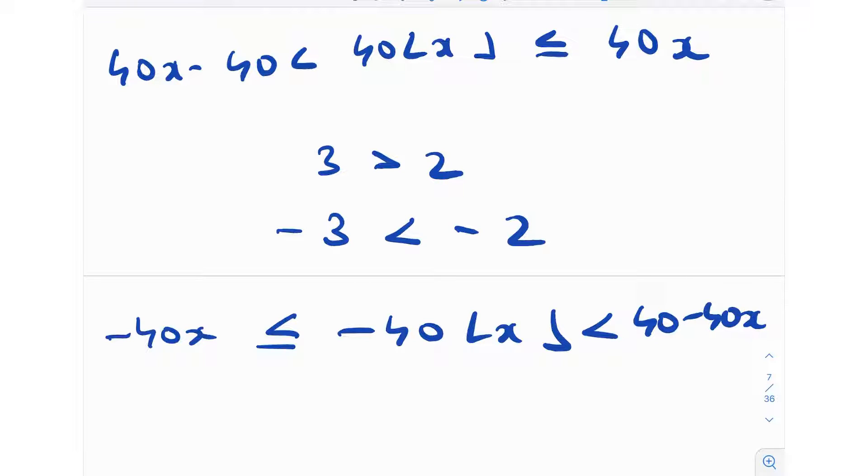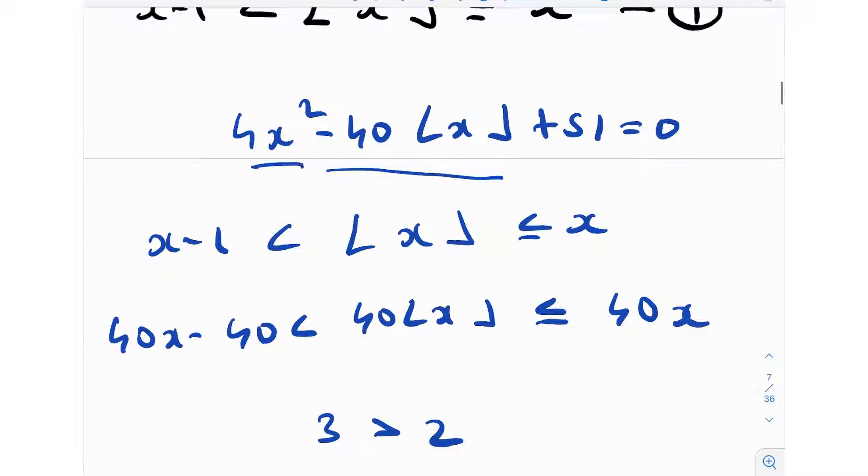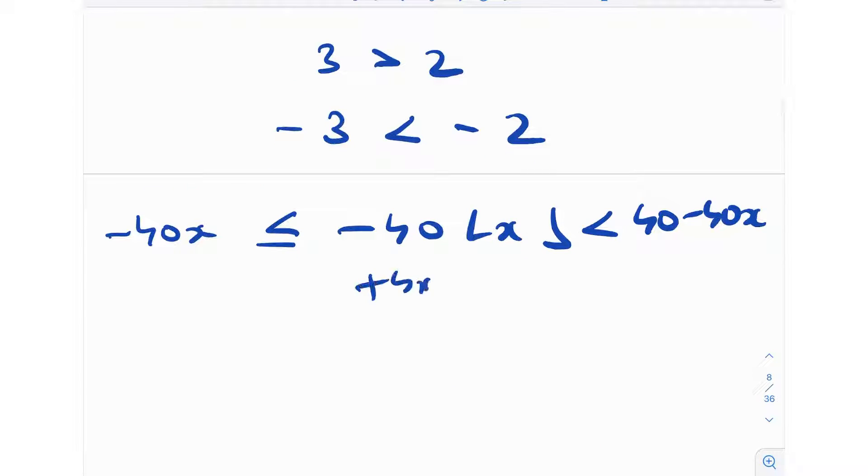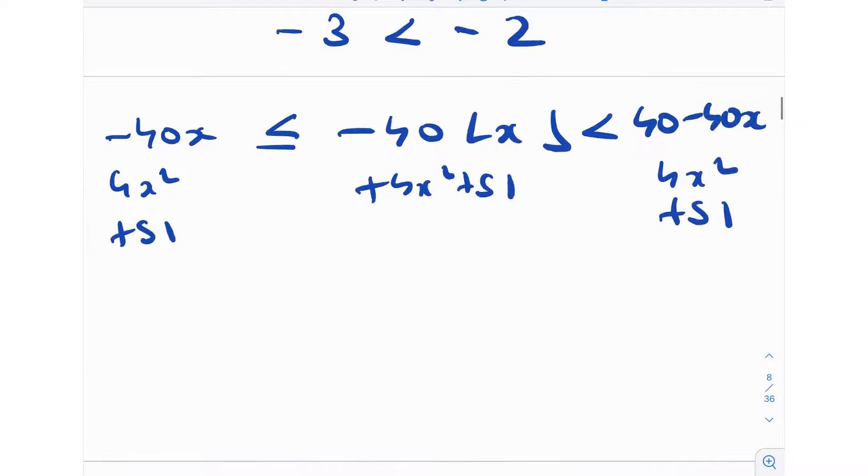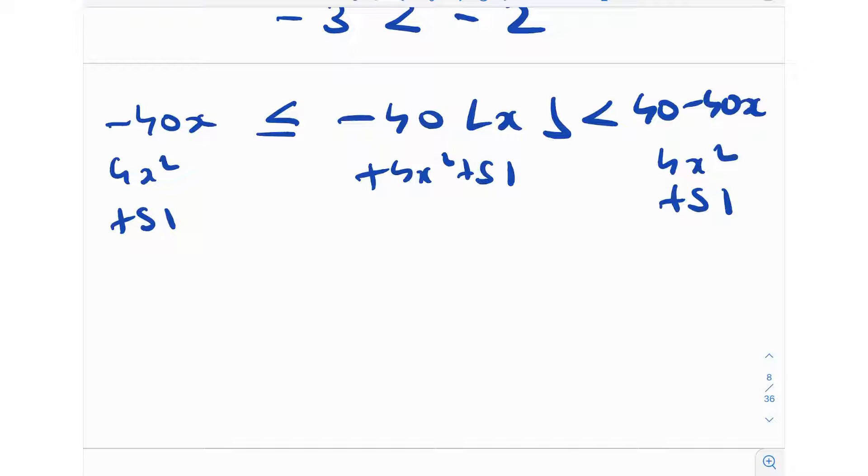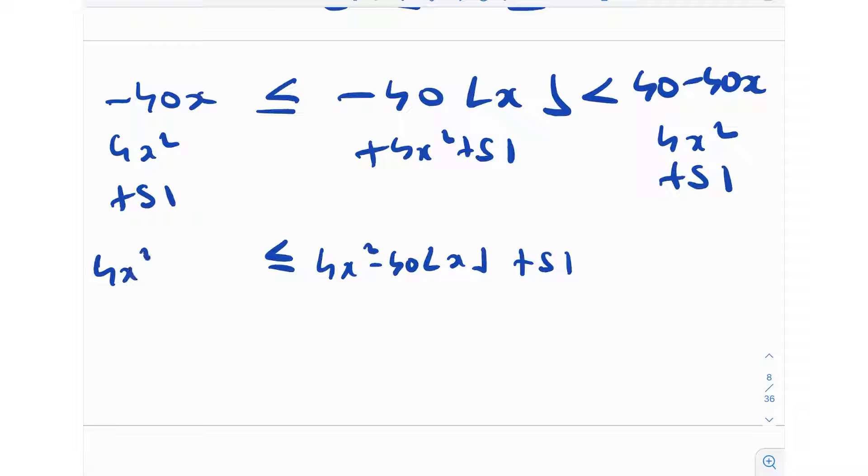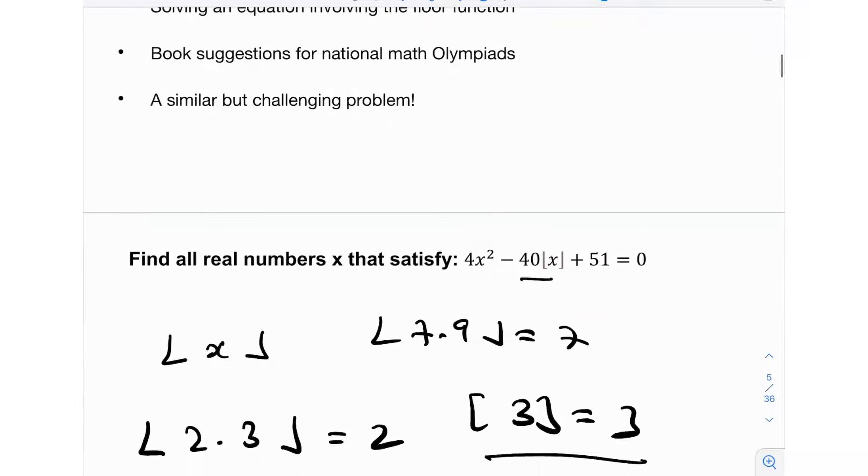If I multiply this by -1, this becomes -40⌊x⌋ ≥ -40x and less than 40 - 40x. After that, we just need to add 4x² + 51 on both sides. Once I do that, I'll get to see that the given equation 4x² - 40⌊x⌋ + 51 lies between 4x² - 40x + 51 and 4x² - 40x + 91. And it's given in the question that this is 0. Over here, we can see that this quantity is 0.